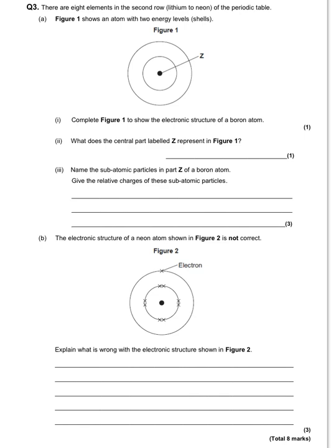This question is about the eight elements in the second row — lithium to neon — in the periodic table. We've got an atom shown with two energy levels or shells, and we've been asked to show the electronic structure of the boron atom. Boron has the symbol B and atomic number five, so there are five protons and therefore five electrons. We put them into the shells: the first shell holds two and is then full, then we put the remaining three in the second shell. You can arrange them at compass points, but what matters is two in the first shell and three in the second.